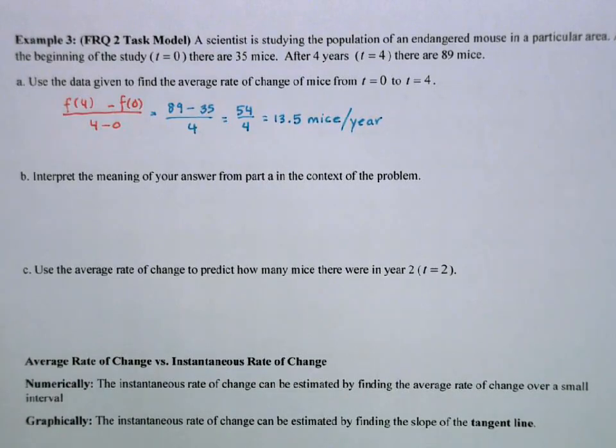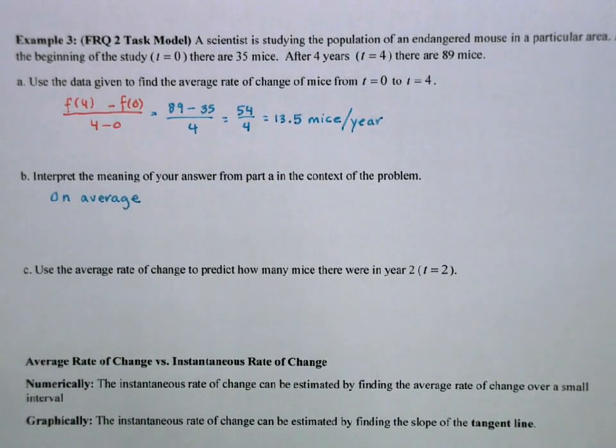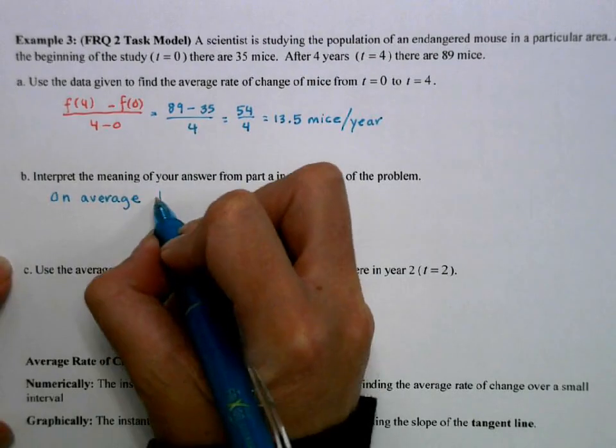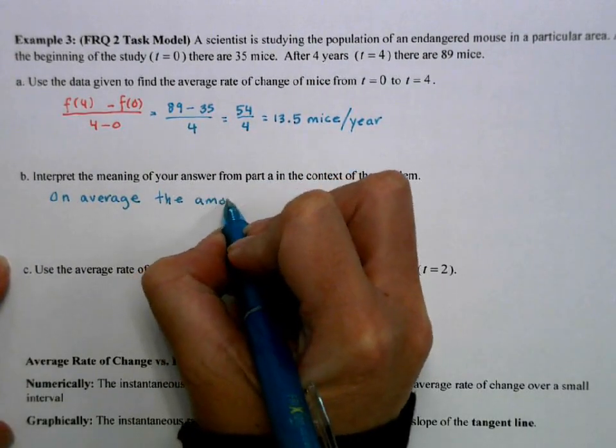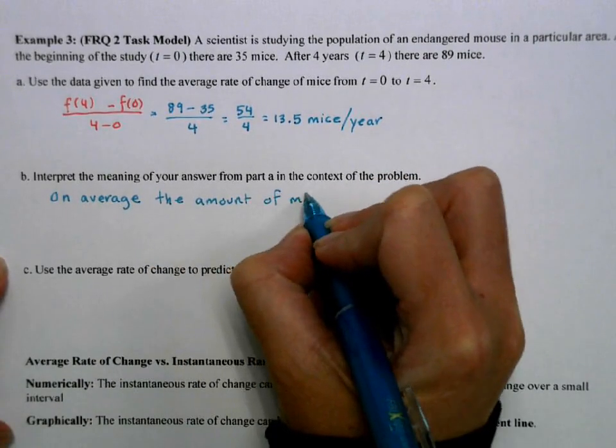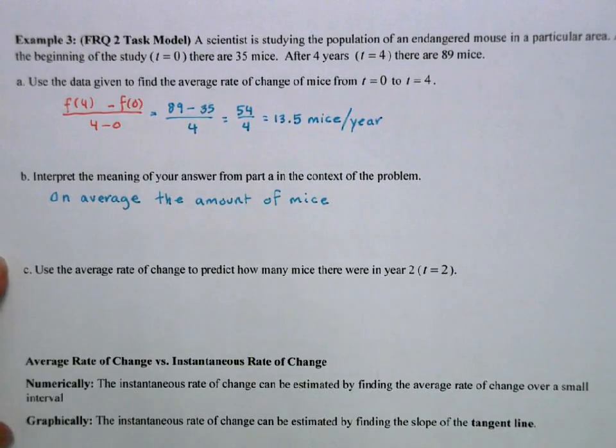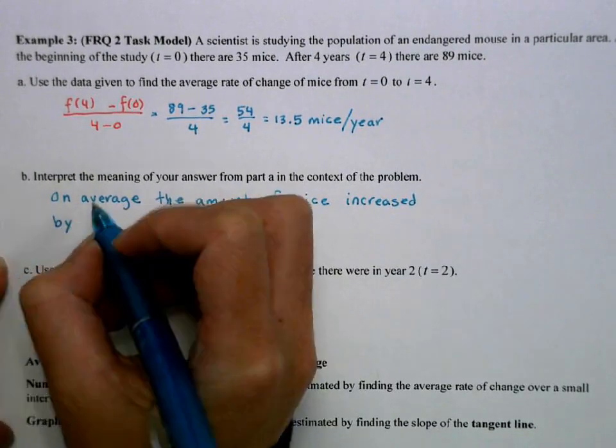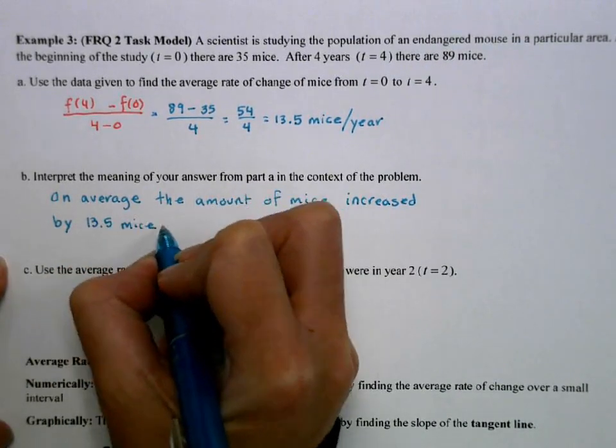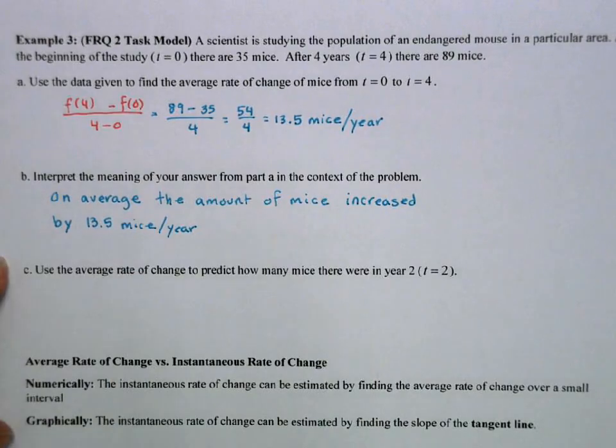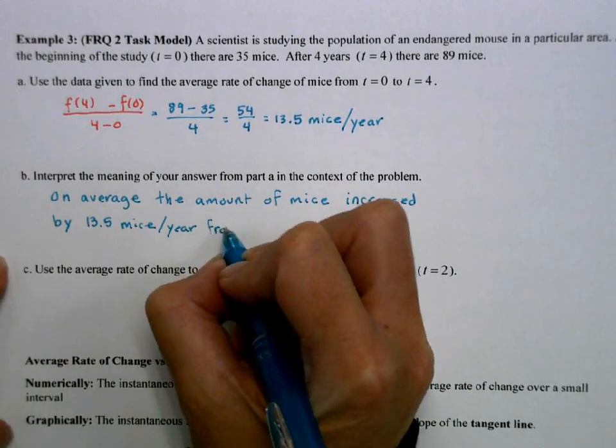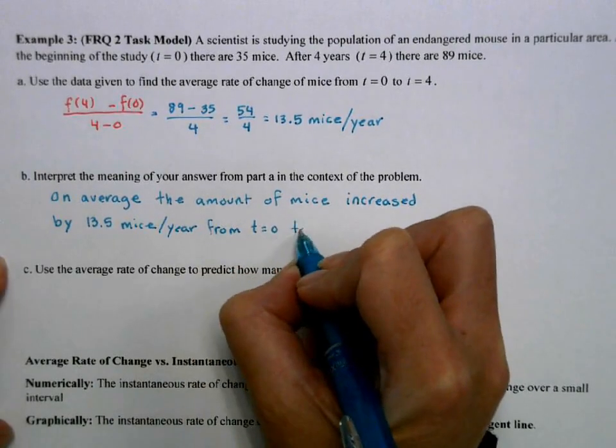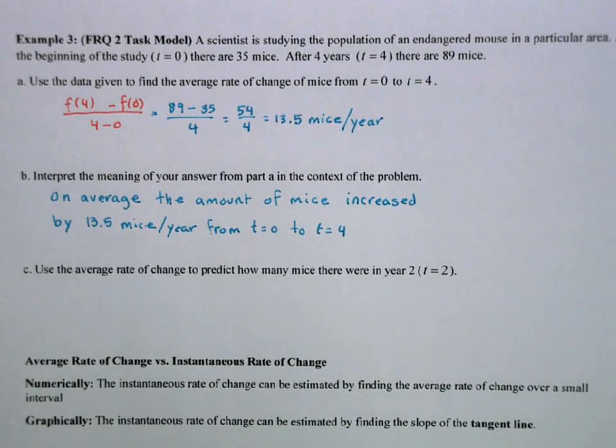So what does this mean? We're going to start with the word on average. On average, the amount of mice. So whatever thing you're talking about. If this is positive, it's increasing. If it's negative, it's decreasing. So our mice increased by 13.5 mice per year. Now it's important to say our time intervals here: from t equals 0 to t equals 4. Because we don't know what's happening after 4 years. We just know what happened from 0 to 4.